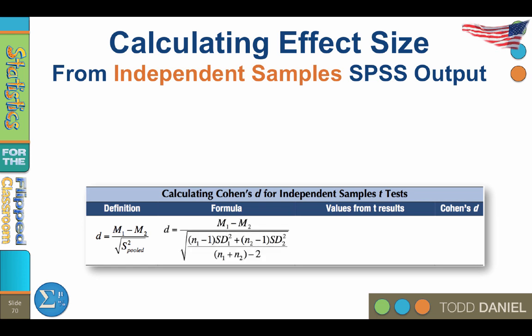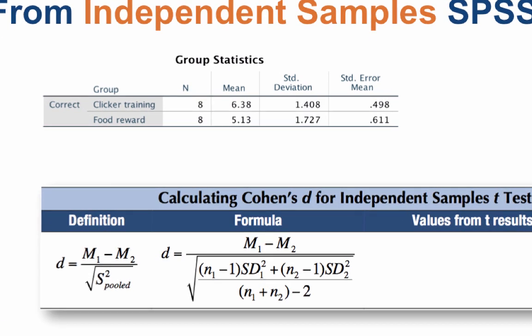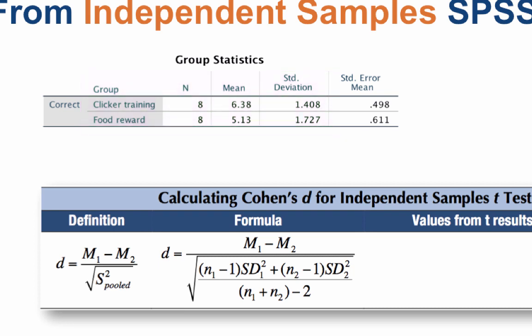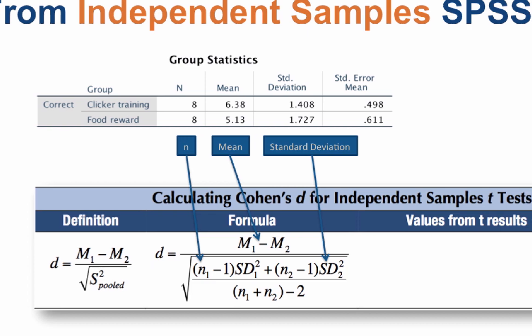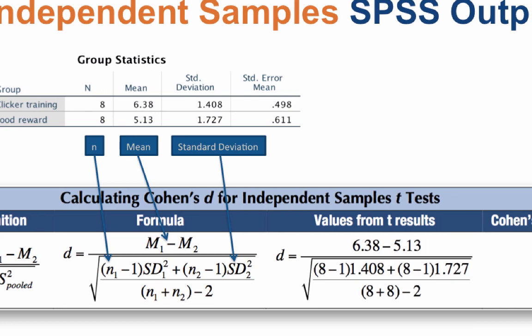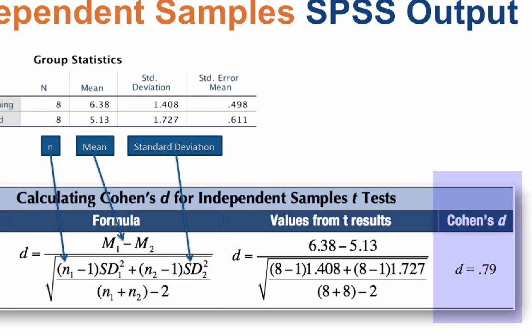Here is the formula for pooled variance, and the information we need to complete this formula is in the group statistics for the independent samples t-test. Here we have two groups, clicker training and food reward, which we will call group 1 and group 2 respectively. To calculate Cohen's D, we need the sample size, mean, and standard deviation for each group. Plug in these measures in their respective places in the formula. When the data have been entered, we use the PEMDAS technique to solve the equation, and we get a Cohen's D of 0.79.